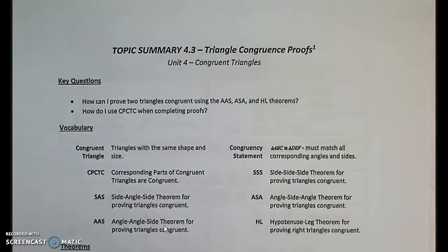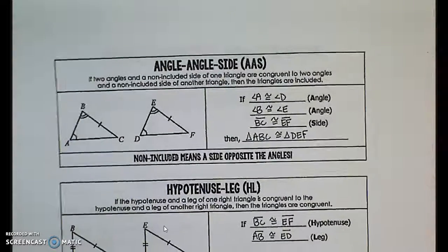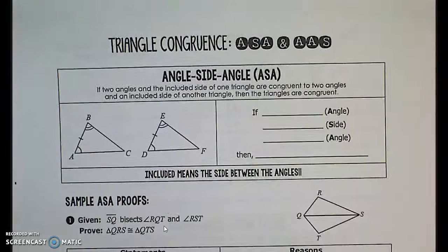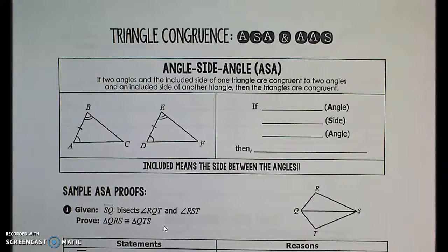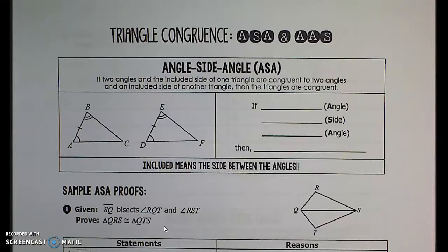Let's flip over to the first page. These are two summary pages I provide for you. We're going to start with the first of the three theorems we're introducing here — the ASA theorem. It says: if two angles and the included side of one triangle are congruent to two angles and the included side of another triangle, then the triangles are congruent.